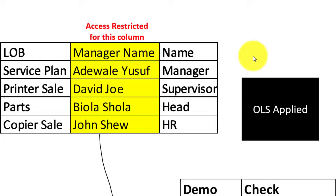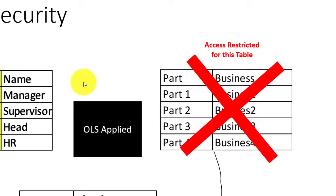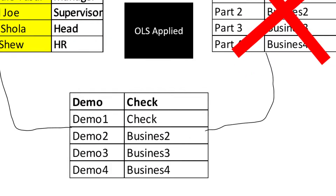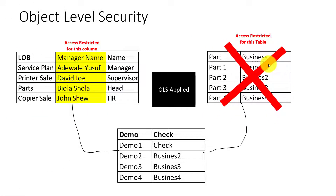For example, I'm restricting access on manager name, which simply means that I don't want some people to be able to access this. When I publish this report to the service, I can apply OLS and share the report with people who won't have access to manager name. From columns, you can also restrict access to tables as well — you can apply OLS to restrict a particular table. That is what OLS means: you are restricting access for columns and tables.